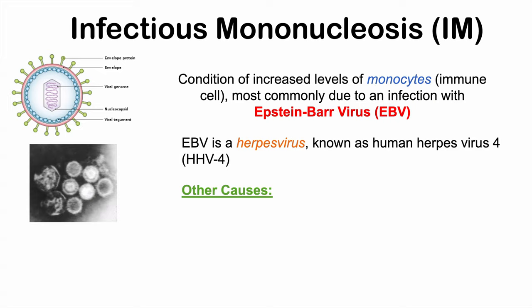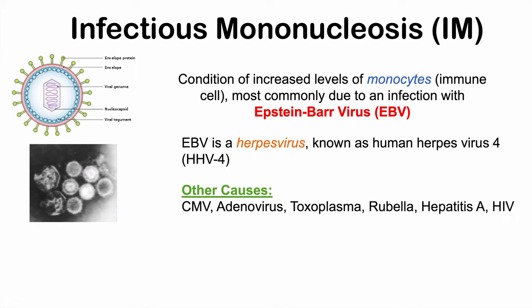EBV is the most common cause of mononucleosis, but there are other causes as well, including CMV (cytomegalovirus), adenovirus, toxoplasma, rubella, hepatitis A, and HIV. So a variety of viruses and one protozoal infection can lead to mononucleosis, but the most common cause is Epstein-Barr virus, and that's what we'll focus on in this lesson.